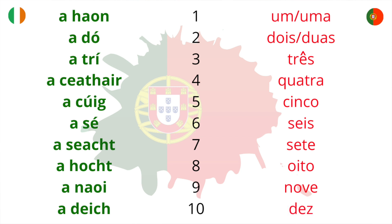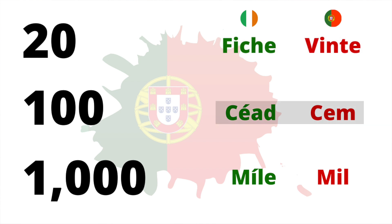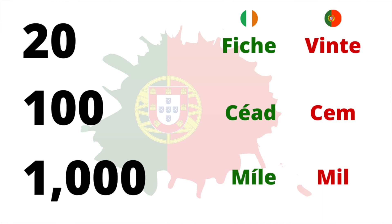Let's look at a few more numbers — 20, 100 and 1000 — where you'll see some interesting parallels. In Irish, 20 is fiche, and in Portuguese it's vinte. A hundred in Irish is céad, and in Portuguese the same: cem. A thousand in Irish is míle — as in céad míle fáilte, a hundred thousand welcomes — and in Portuguese it's quite similar: mil.